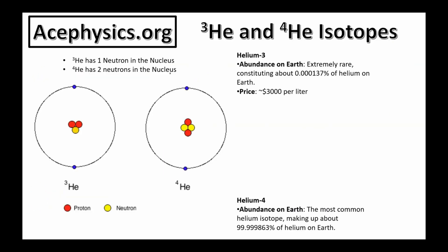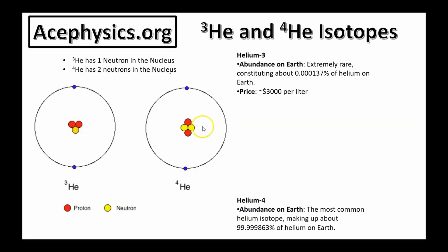To begin, I want to remind you about two helium isotopes, helium-3 and helium-4. This is a cartoon of helium-3. It has two electrons, one neutron, and two protons. Helium-4 has two neutrons, two protons, and two electrons. So the difference is helium-3 has one less neutron in the nucleus than helium-4.